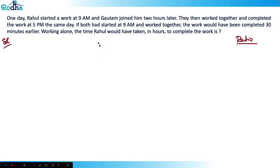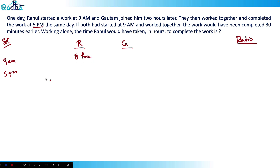There are two people here — Rahul and Gotham. Rahul started work at 9am and completed at 5pm, so Rahul worked for eight hours. Gotham joined two hours later at 11am, and the work finished at 5pm, so Gotham worked for six hours.